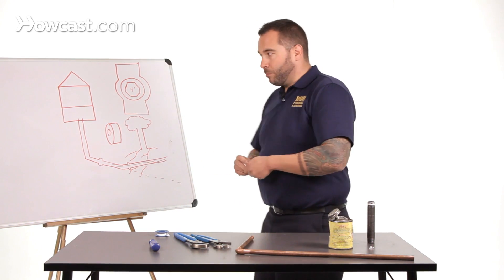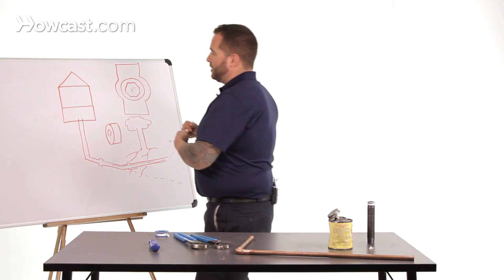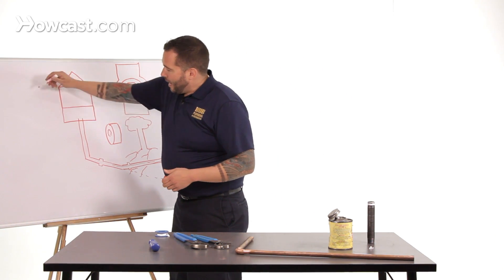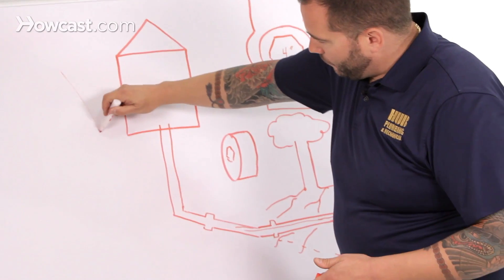So when that happens, the plumber will take a snake. The snake is a big machine, it's a large, generally a two-piece affair, and there's a half-inch cable that comes off of it with a claw.